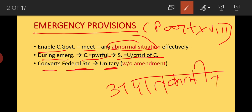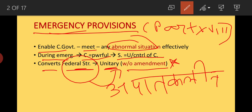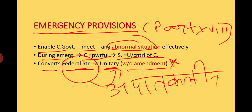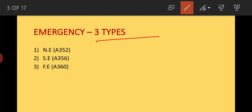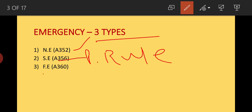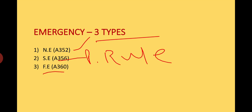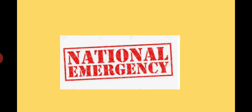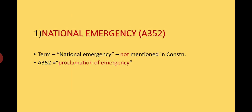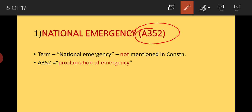During emergency, the federal structure converts into a unitary one without any amendments. There are three types of emergency: National Emergency under Article 352, State Emergency (also called President's Rule) under Article 356, and Financial Emergency under Article 360.